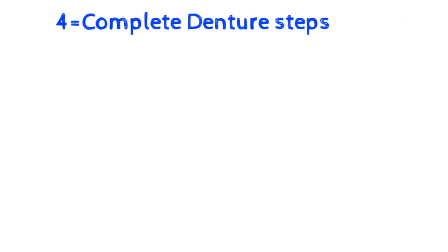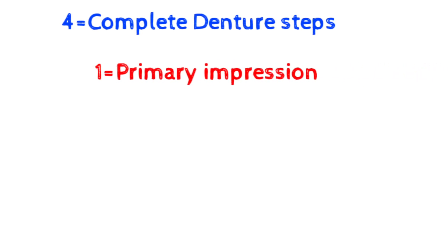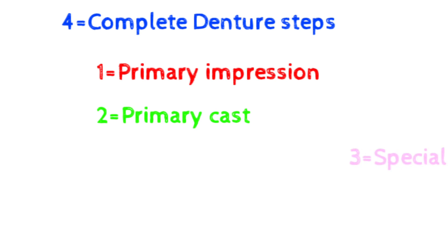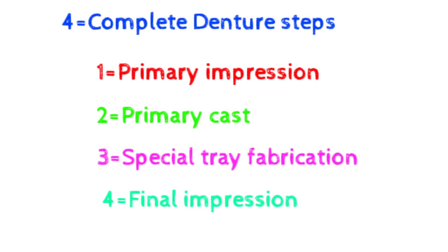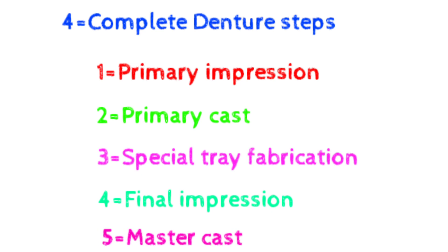Now the fourth topic is the steps of complete denture fabrication. Step one is the primary impression. When we pour this primary impression we get a cast known as the primary cast. On this primary cast we make a self-cure acrylic tray known as the special tray. Using this special tray we take a second impression known as the final impression. When we pour this final impression we get a cast known as the master cast. The next step is record base construction.